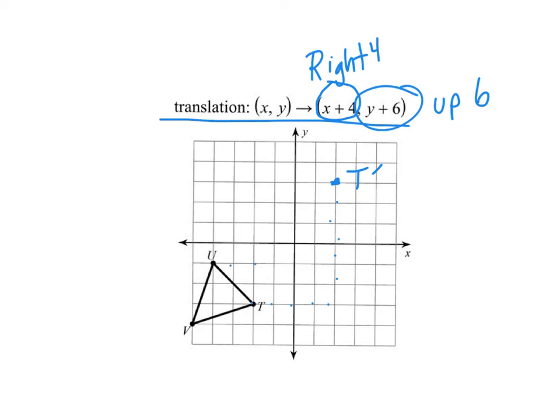We'll go to U, 1, 2, 3, 4, 1, 2, 3, 4, 5, 6. That's U prime way up there. And then V, 1, 2, 3, 4, 1, 2, 3, 4, 5, 6. And that's V prime.